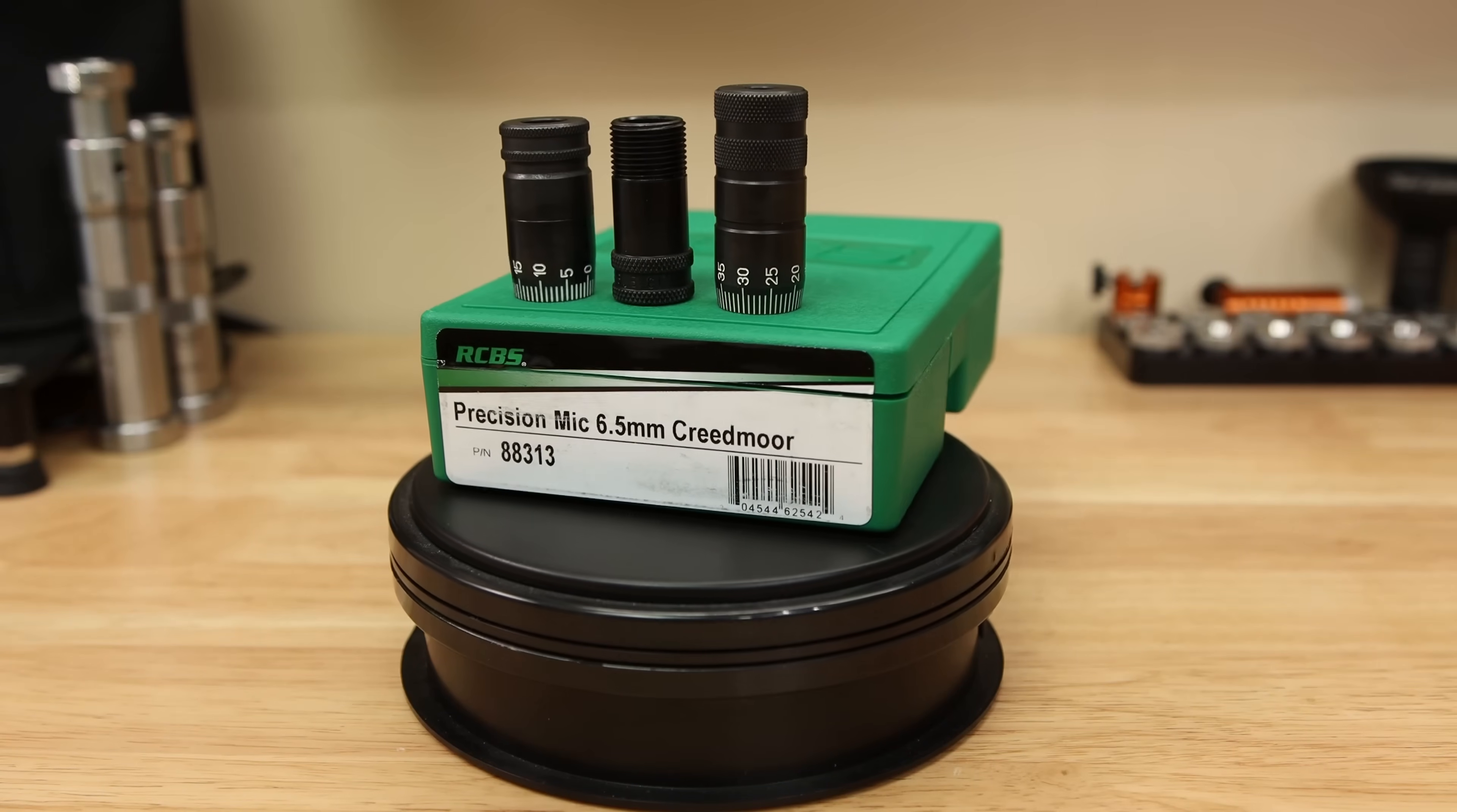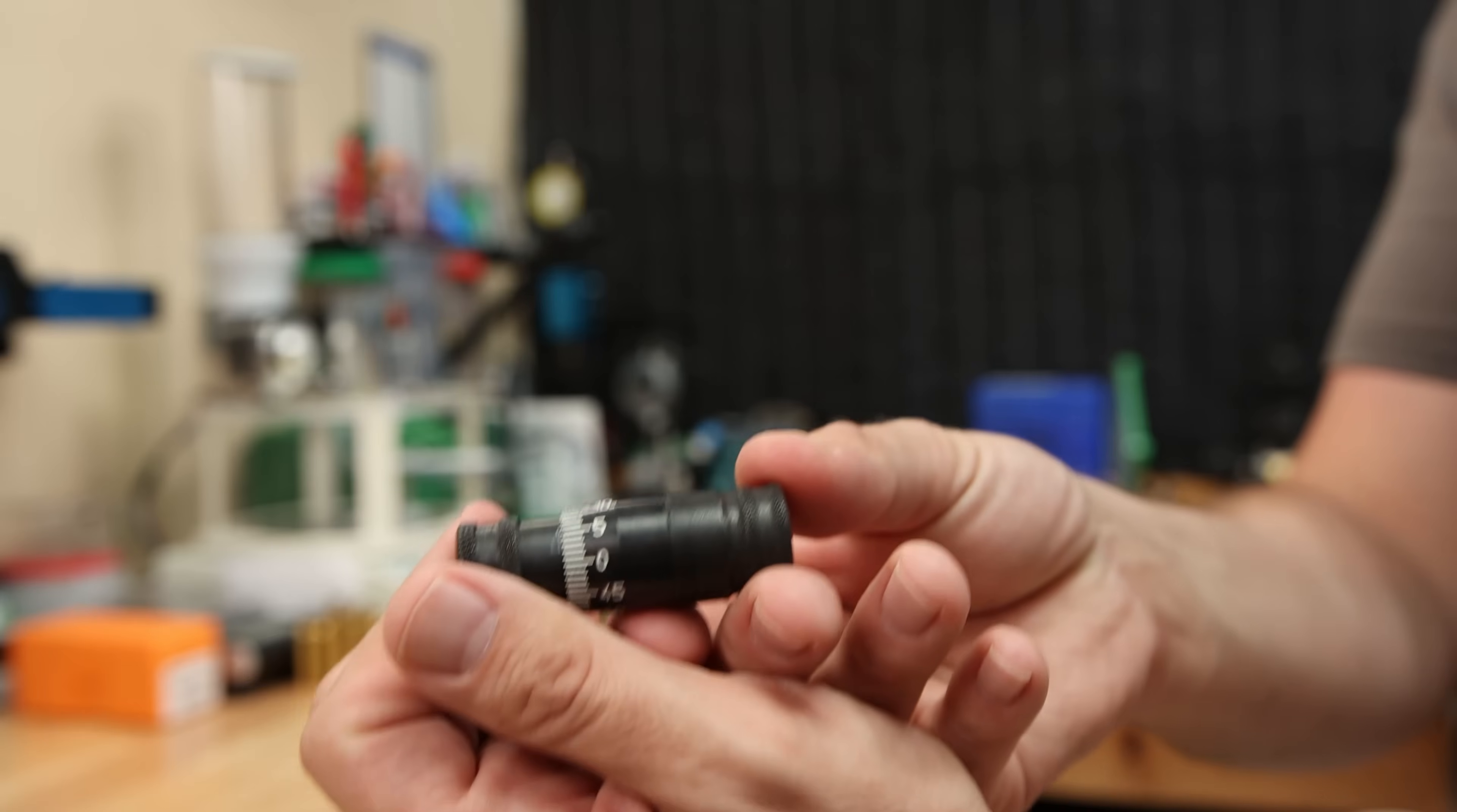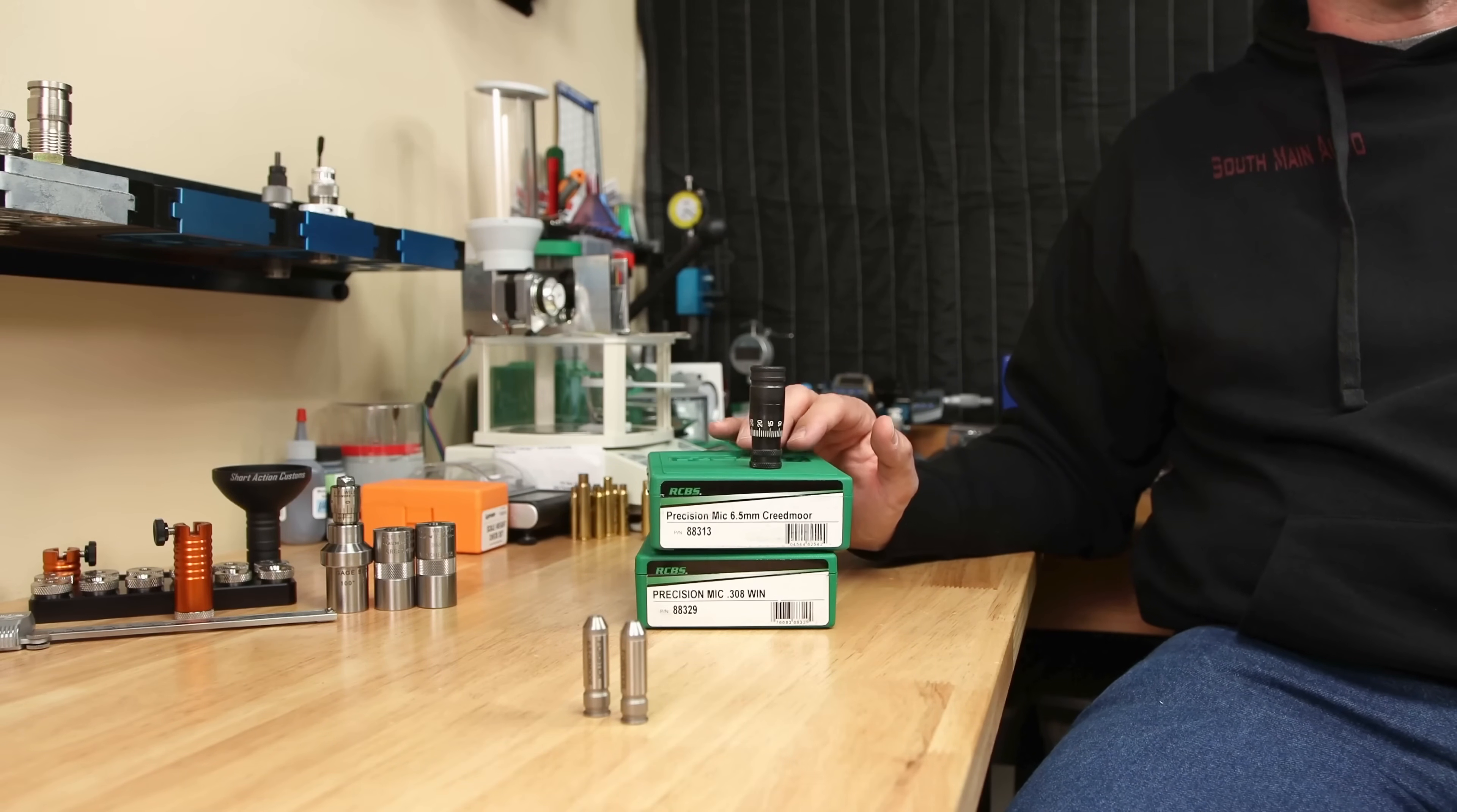Be very careful if you're comparing the measurements you get from this to a SAMI drawing. Our next tool is from RCBS and it's the precision micrometer. It's pretty neat and very easy to use. You can simply put in a fired case, record the measurement, size it, and then measure the difference. Additionally, it has the ability to comparatively measure your projectile's seated depth. But I'm going to try and stay only focused on headspace.